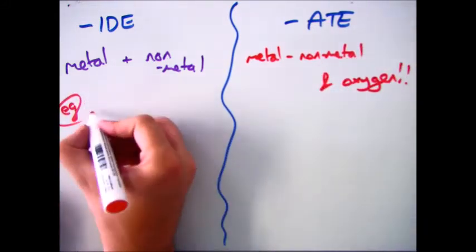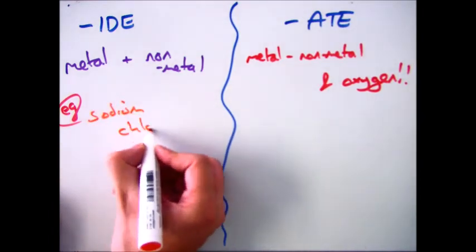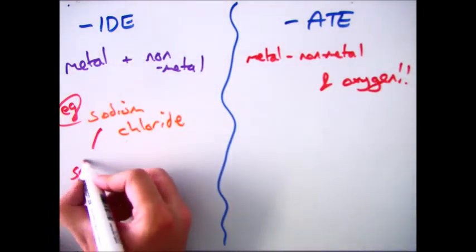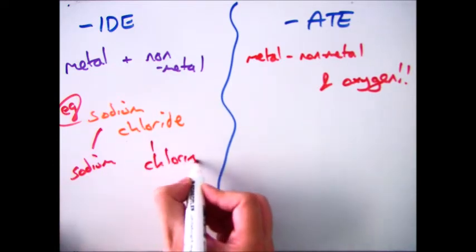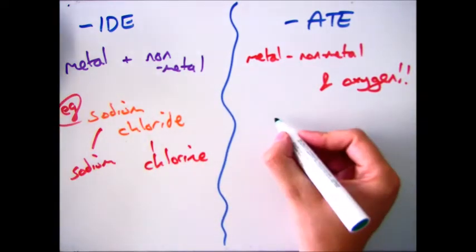So an example of that, if we start off with our -ide, we have sodium chloride which is made up of sodium and chlorine. So it's our metal and our nonmetal, which is NaCl.